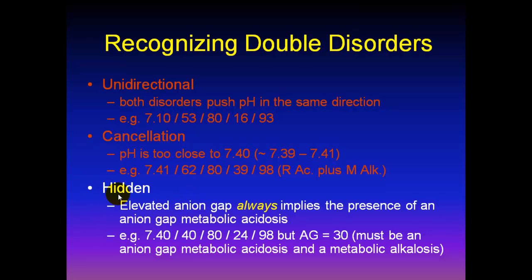Hidden acid-base disorders are the trickier ones. We start with the idea that an elevated anion gap always implies the presence of an anion gap metabolic acidosis. For example, this is a completely normal blood gas — the normal one from the beginning of this talk — but in this case we learn the anion gap is 30. Knowing the anion gap is 30 shows there must be an elevated anion gap metabolic acidosis. The only way that can happen, as we'll discuss, is that there should also be a metabolic alkalosis.